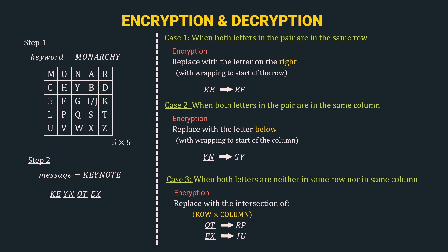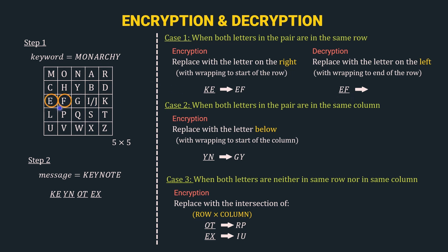Now let's see how to do decryption. Case 1: both letters in the pair are in the same row. In decryption, we replace with the letter to the left, wrapping to the end of the row if needed. Taking diagram EF — E and F are in the same row. E is at the start of the row, so we wrap to the end — giving K. F moves left to E. So EF decrypts back to KE — our original diagram.